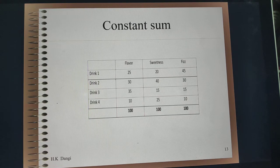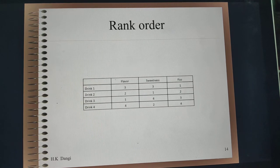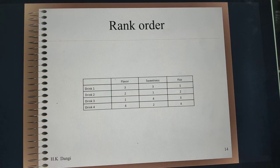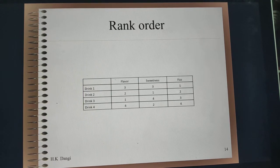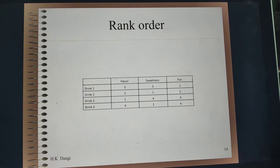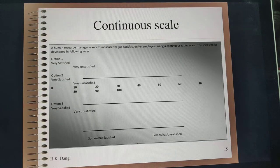Another kind of comparative scaling technique is rank order scaling, which is simply assigning ranks based on certain overall characteristics. For example, you ask the respondent to arrange four drinks in terms of their flavor, sweetness, or feasibility, and the respondent ranks them. Similarly, non-comparative scaling technique can be a continuous scale or an itemized rating scale.